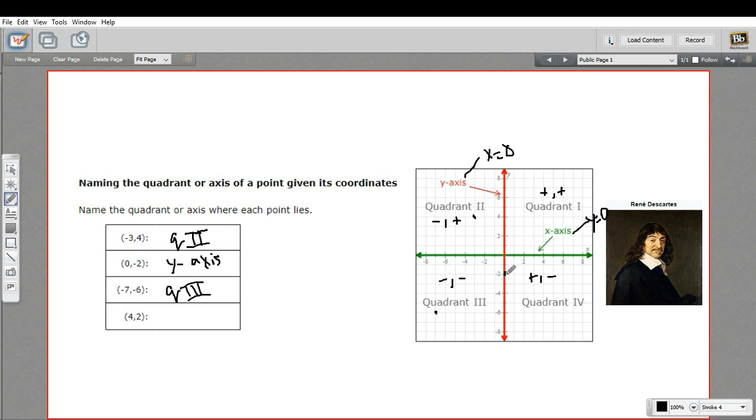And finally, four, two. That's both positive. So that should be quadrant one. And if we plot that, it's right there. Yep. Right in quadrant one.